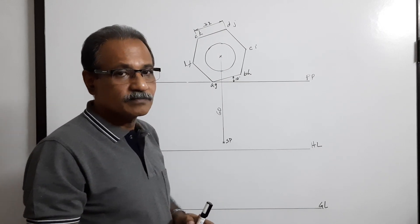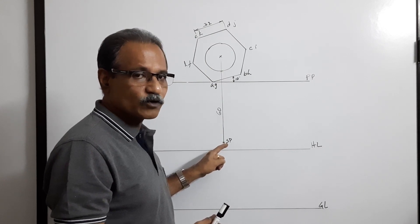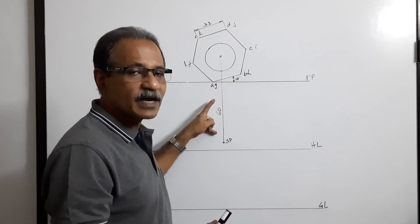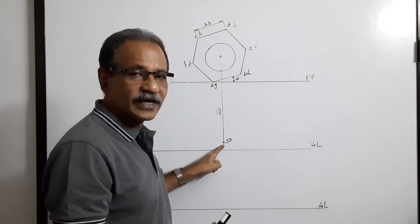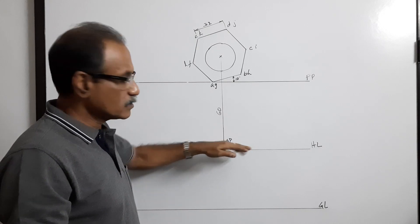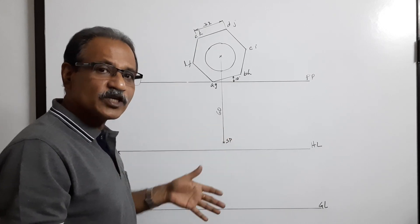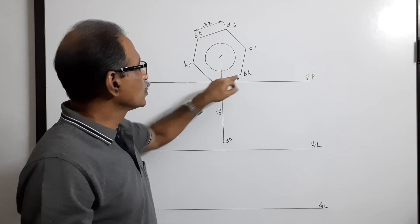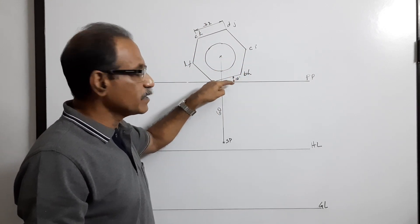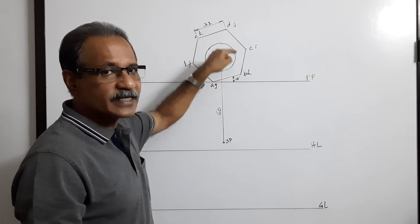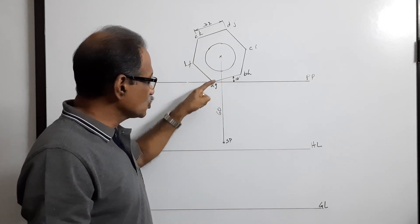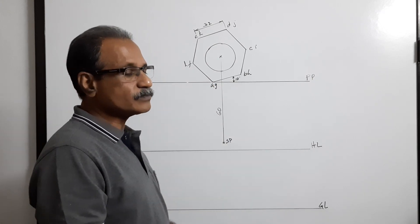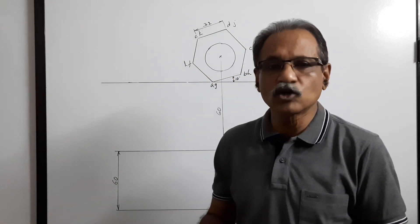The station point is right in front of the axis; the central plane passes through the axis of the nut. I find the center and draw a line. The station point SP is 60 mm away from the picture plane. I draw HL anywhere, preferably below SP, and the height of the station point is 60 mm above the ground, so 60 mm below HL I draw GL. To summarize: draw the picture plane, draw the hexagon with one corner touching the picture plane and one side at 10 degrees, draw the circle of 32 mm diameter, locate SP 60 mm in front, draw HL, and 60 mm below HL draw GL.